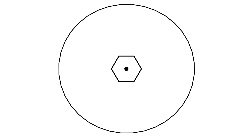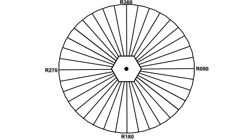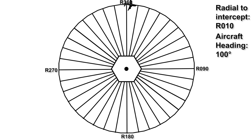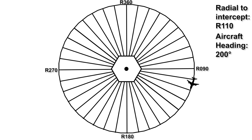Let's place our VOR in the middle and make a 36-sided bicycle wheel out of it — all of the spokes are radials, radials that we're going to use to fly the arc. We want to intercept every radial at a 90 degree angle, so that means we have to adjust our heading by 10 degrees every time we intercept one. If you do this long enough you'll fly a beautiful triacontakai hexagon around the VOR DME at a constant distance.